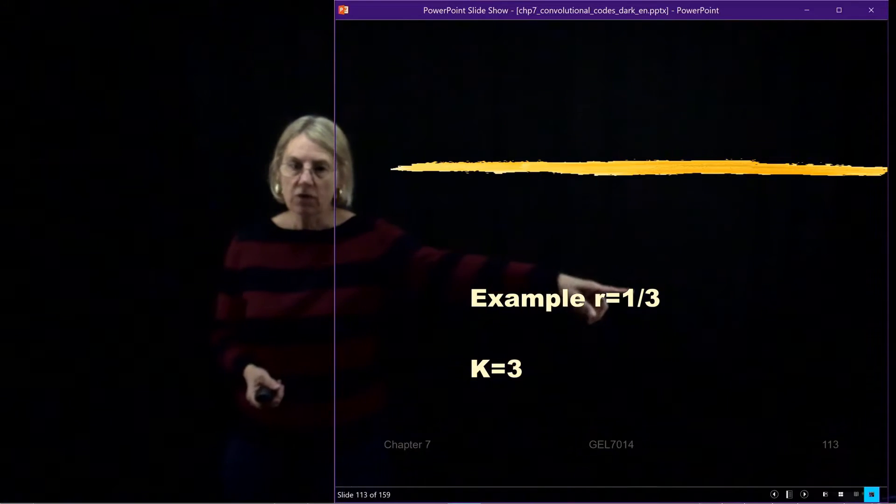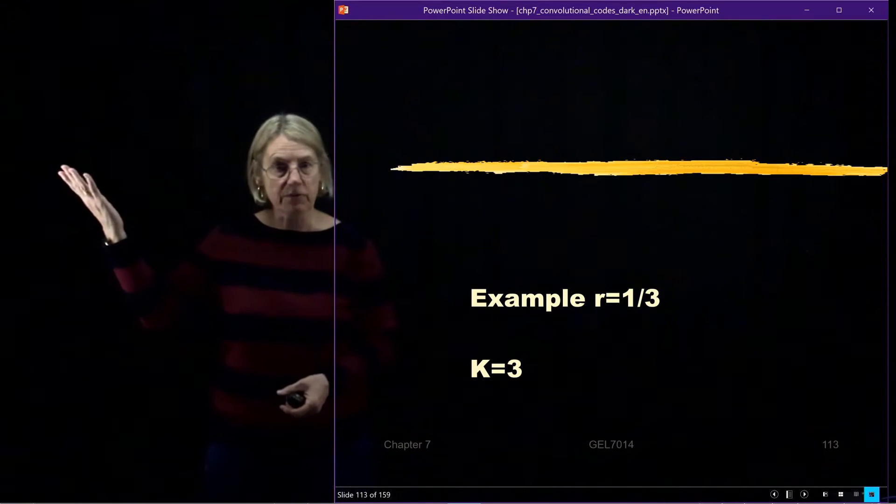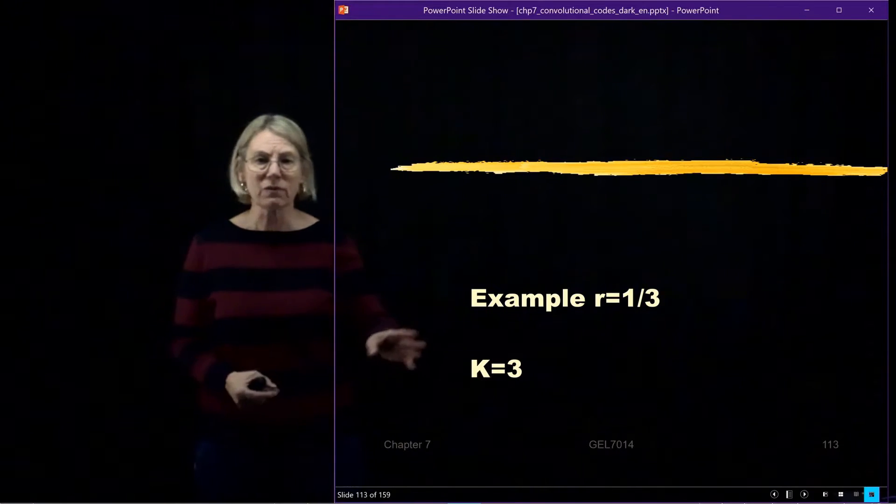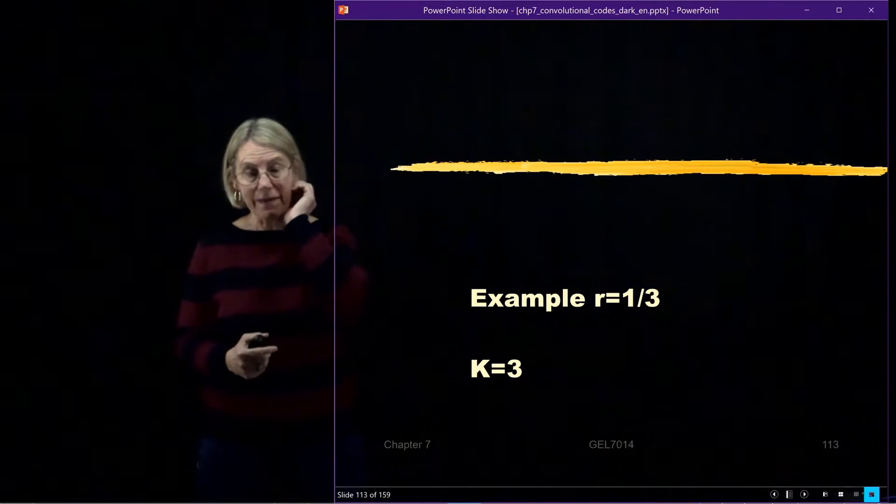We'll make the coding rate 1 over 3 as opposed to the previous example, which was always 1 over 2. But we'll keep the same constraint length K=3 because we don't want to have our states get too big. It just gets a little hard to manage.